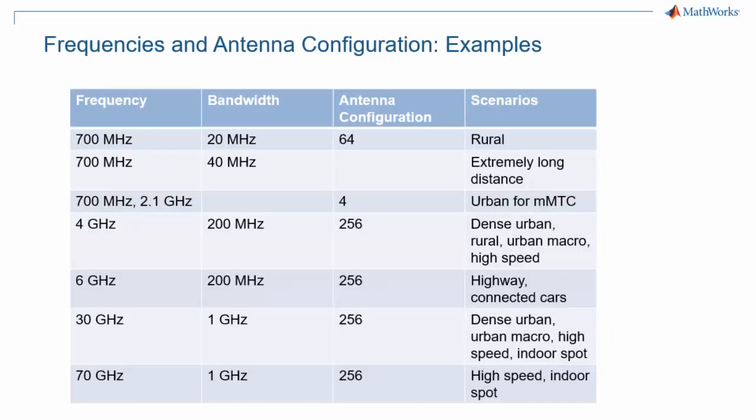Here are a few example configurations from the scenarios listed on the previous page. When you look at the 38.913 document, you'll find antenna configurations up to hundreds of antennas, and you may notice bandwidths envisioned to exceed the 400 MHz capability defined in the current version of the standard. Also of interest is the wide range of carrier frequencies, from 700 MHz all the way to 70 GHz.